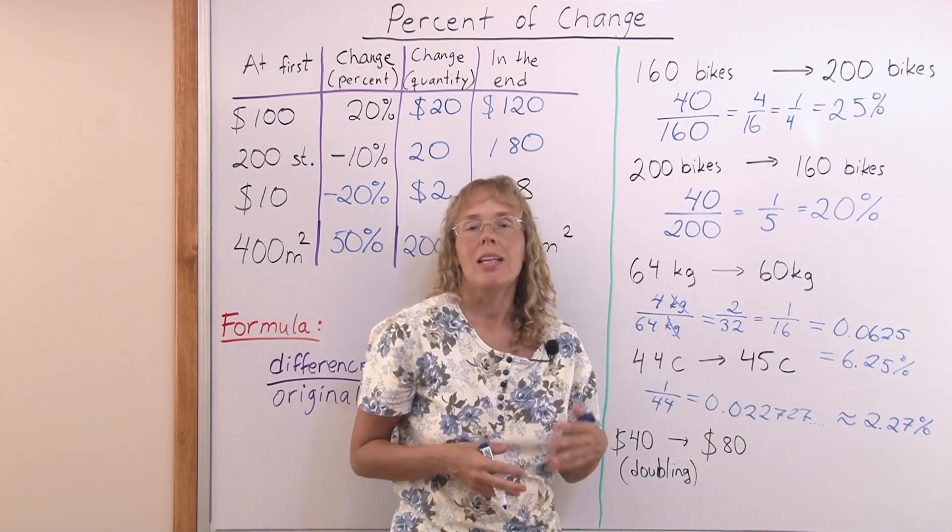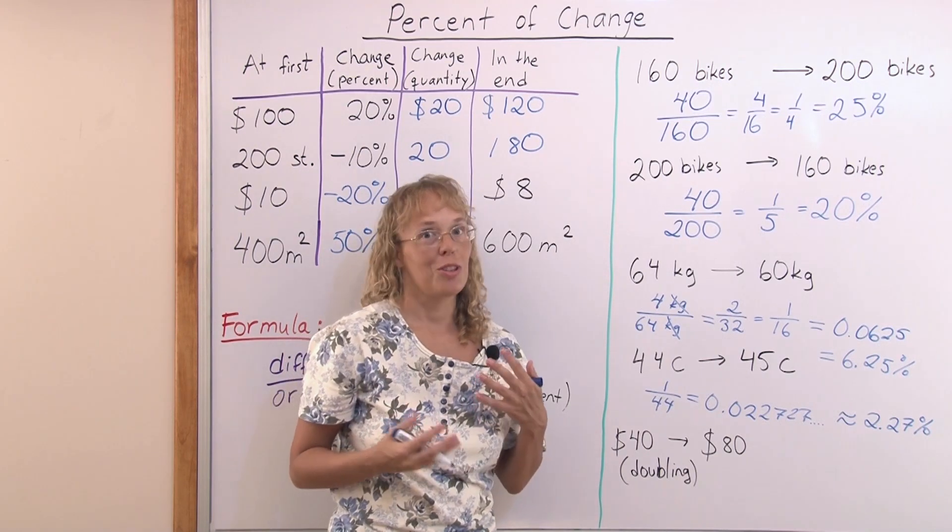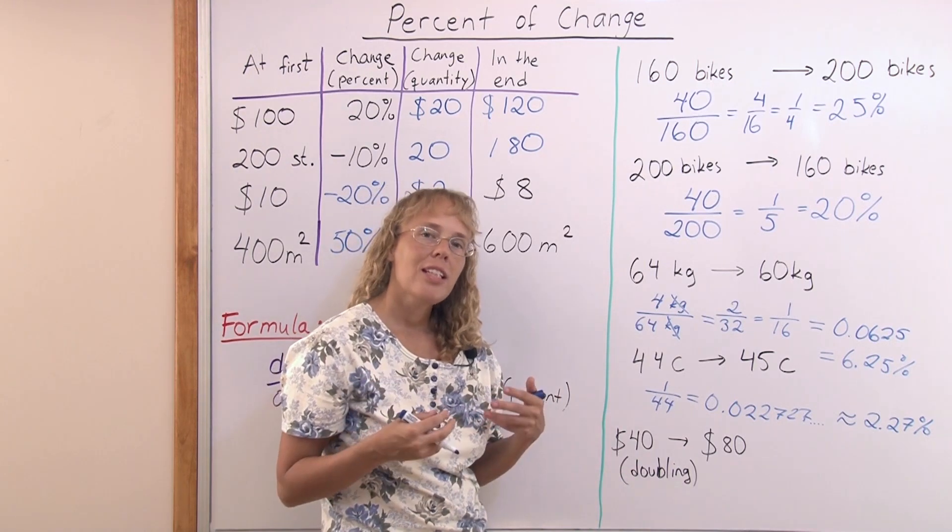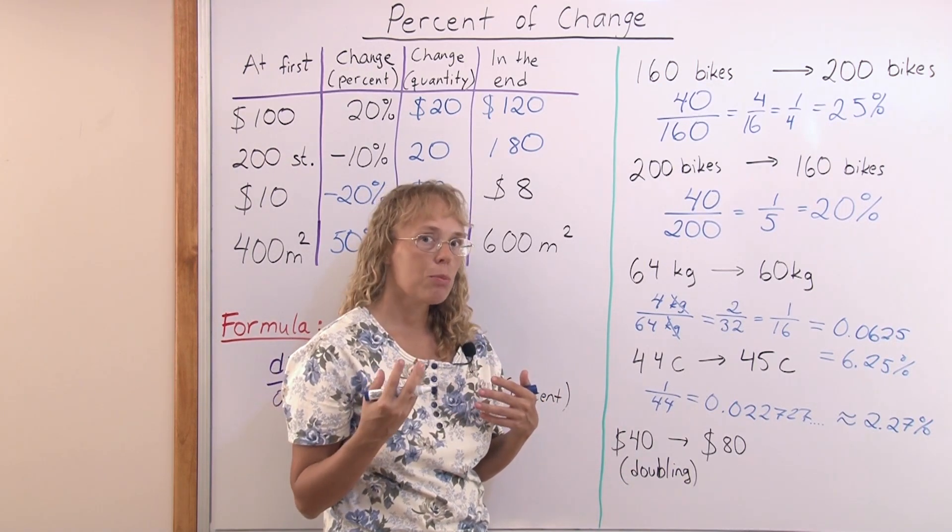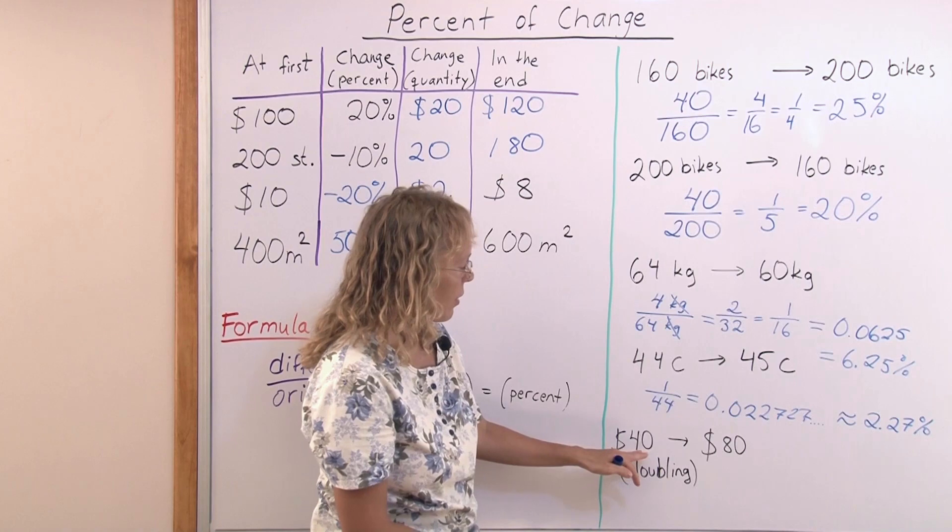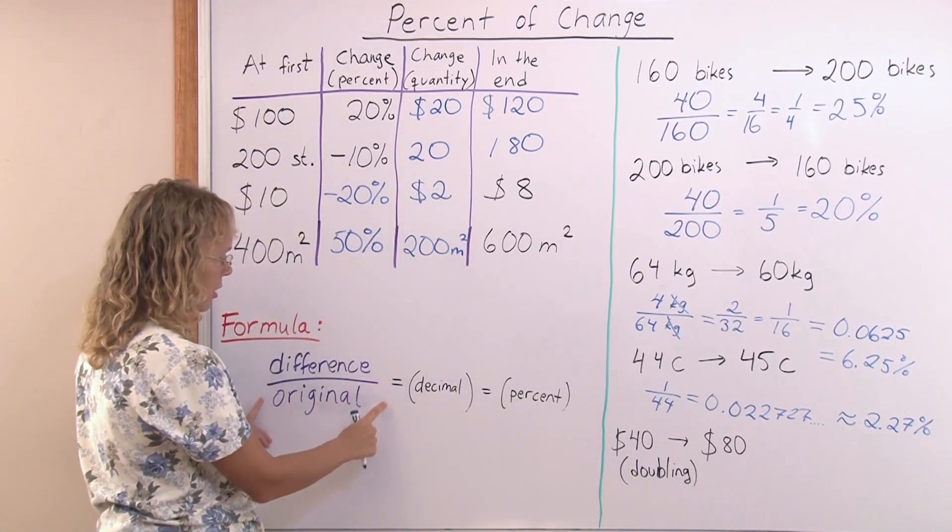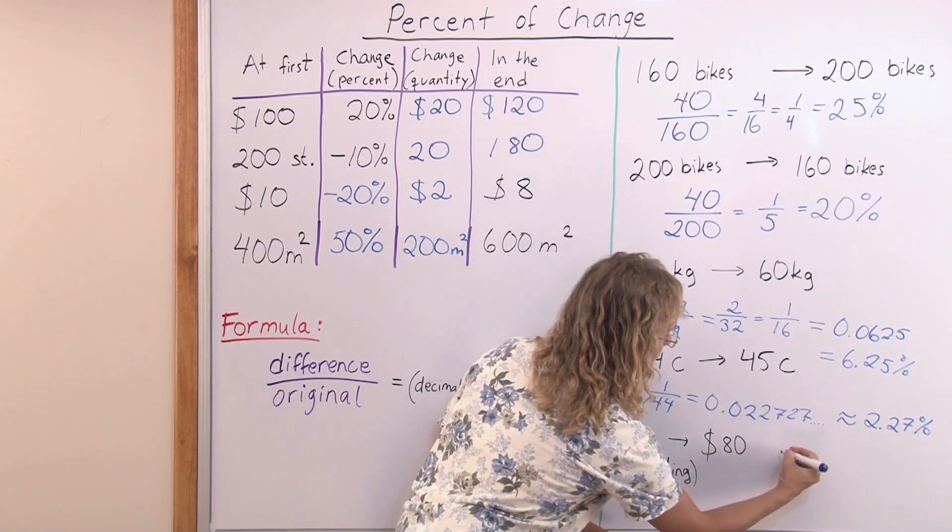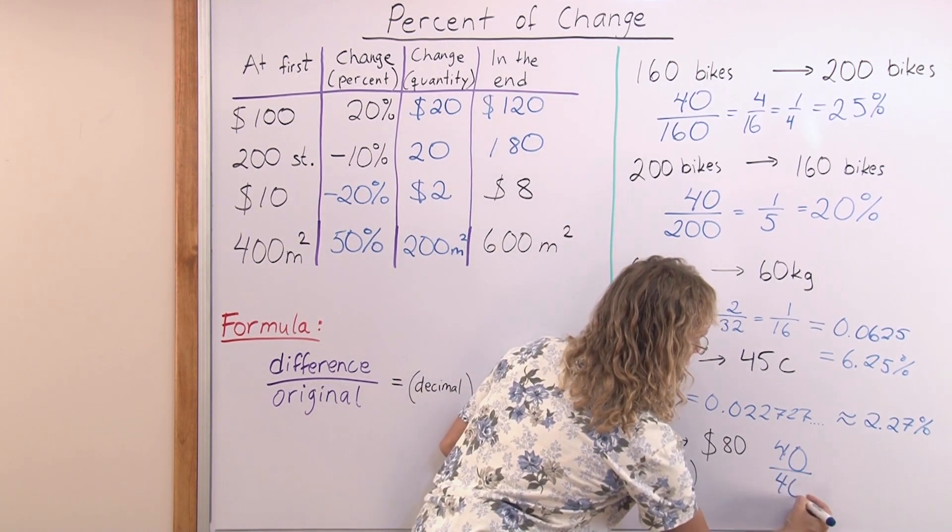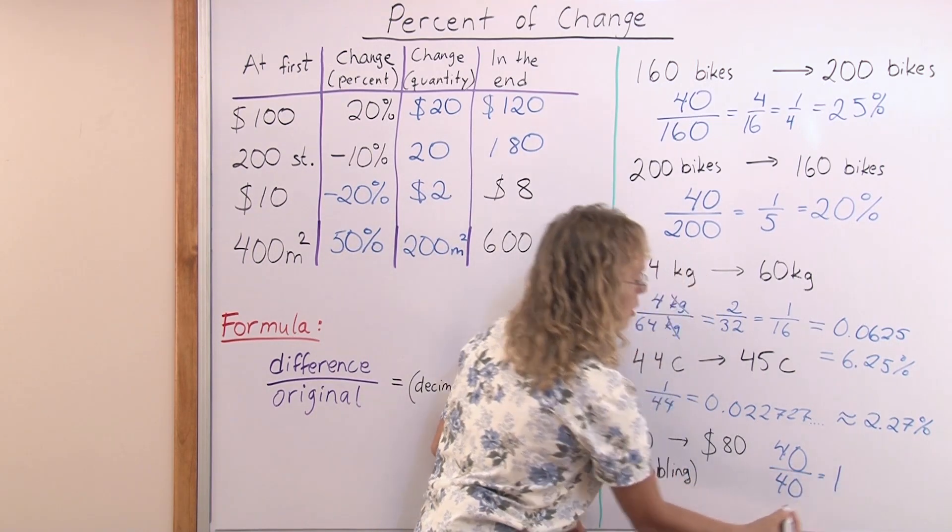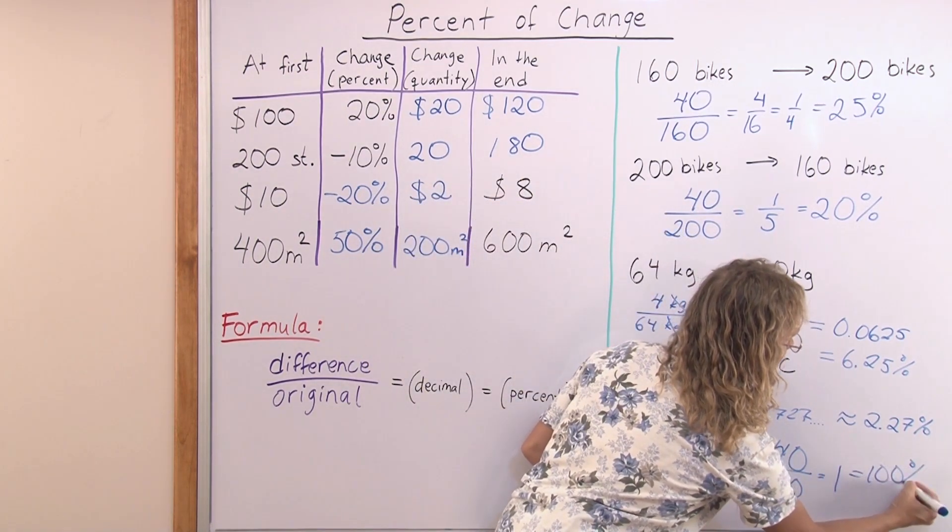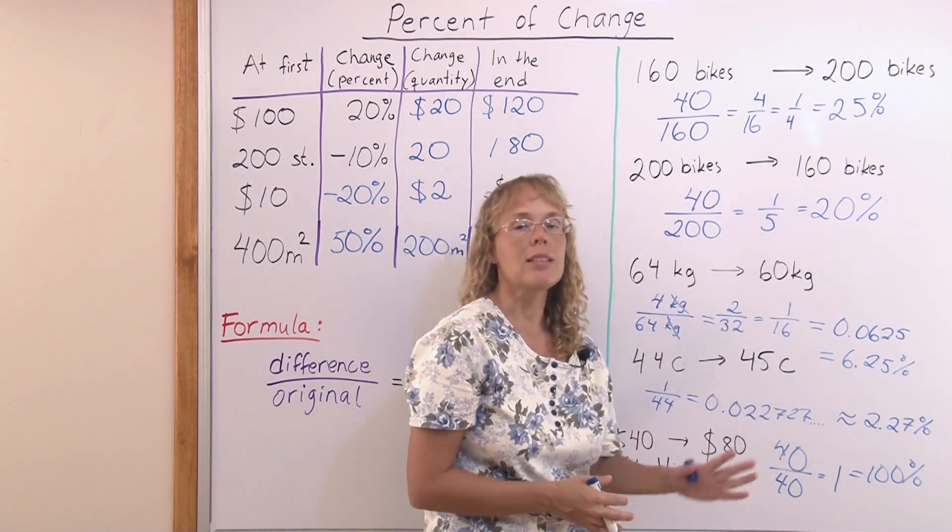My last example I chose so as to show you how not to get fooled. Let's say a price doubles. Will the percent of increase be 200 percent? That's how many students would think. But if you just think here, let's look at the idea of our formula. Look at the difference over the original. The difference is 40 dollars. The original is 40. We get our fraction which is going to be simplified to 1. And then that as a percent is 100 percent. There's a 100 percent price increase. That means doubling the price.